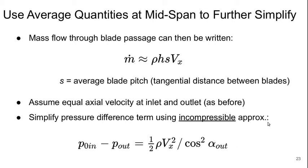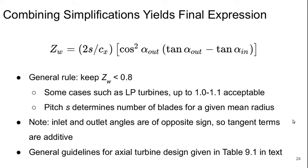Now, of course, the flows are usually highly compressible in turbines, but because this is a definition that's being used for an empirical coefficient, it doesn't really matter as long as this definition is used consistently.